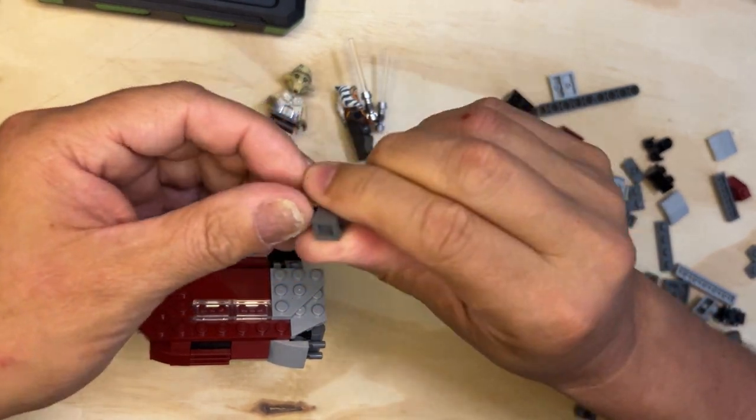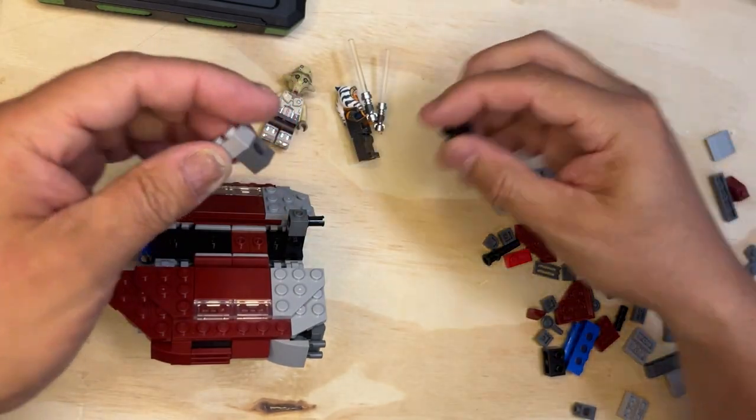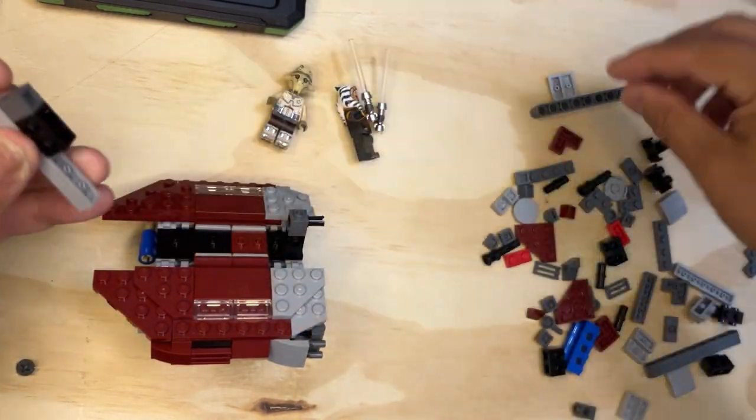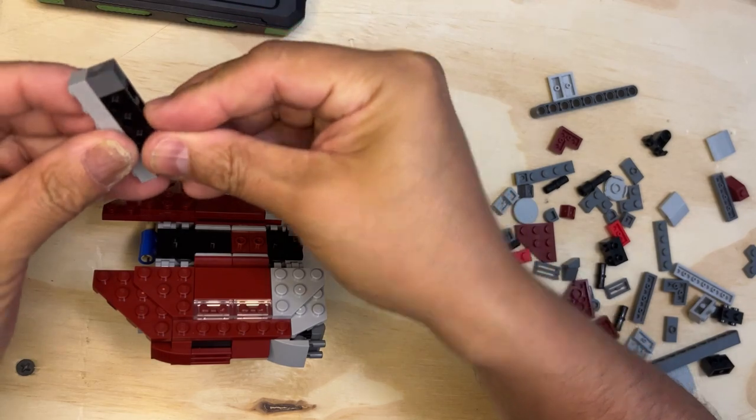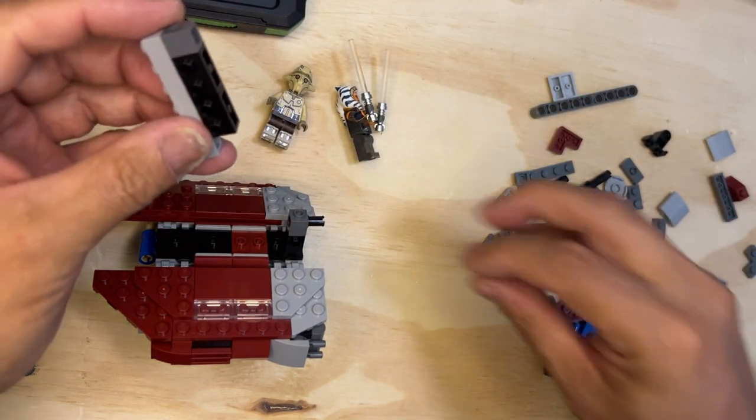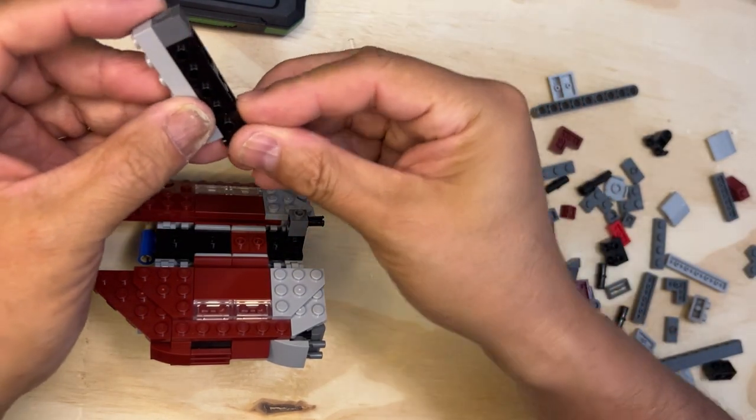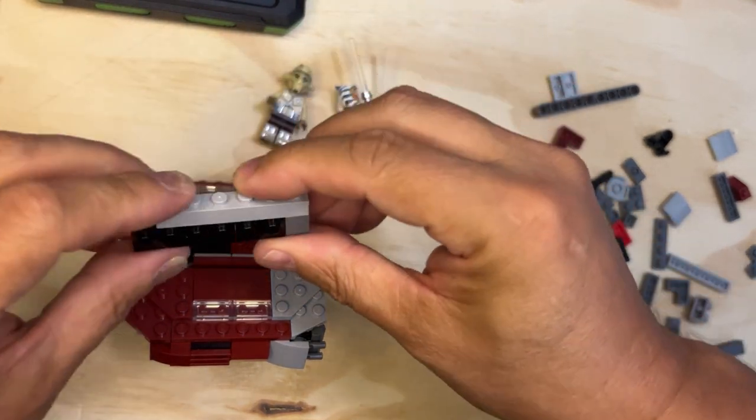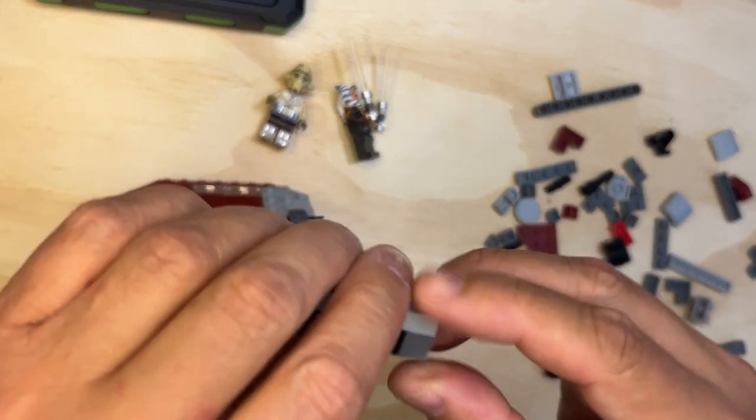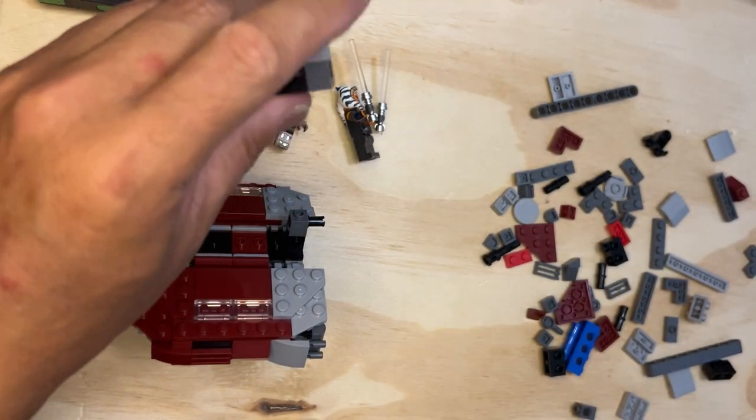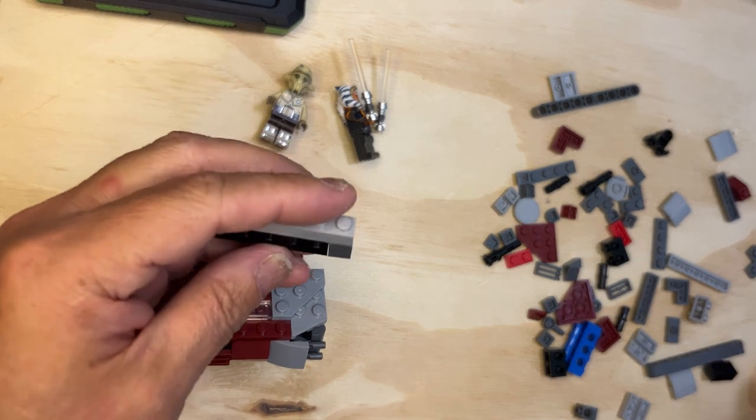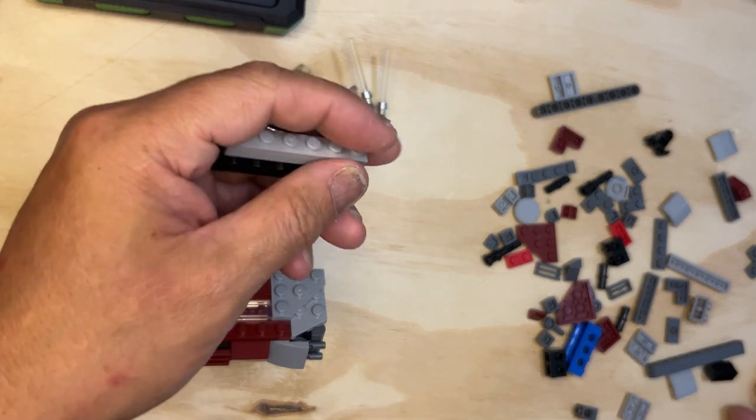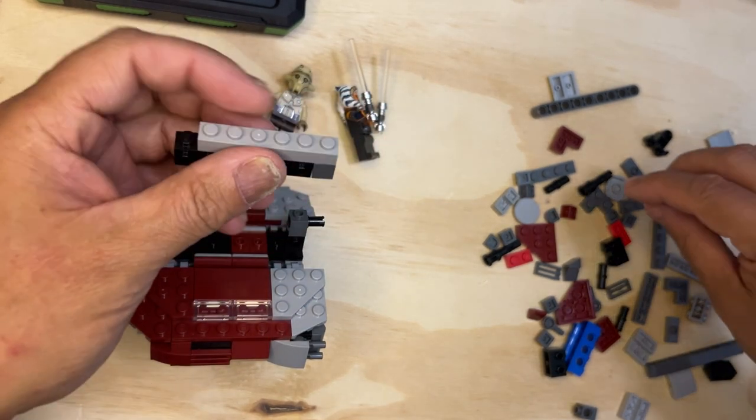And then I need three of these black SNOTs like this, so I need three of them. I'm getting three of them just like that. Okay, yeah, I got time. I always check my time because I don't want my videos to be too super long. Okay, so then I need...